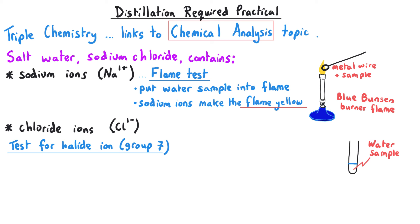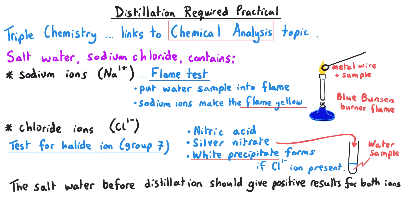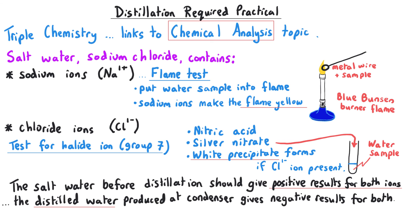To do this, we get our sample in a test tube and add some nitric acid, then add some silver nitrate. We would expect to see a white precipitate forming if there were chloride ions present. The salt water before distillation should give positive results for both ions because they are both present in salt water. But the distilled water produced at the condenser would give negative results for both ions, since those ions get left behind in the distillation flask.